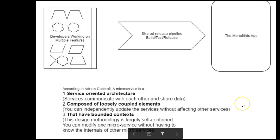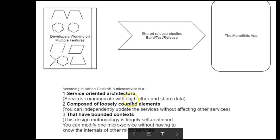Here's a definition I really like, made by Adrian Cockcroft. He said a microservice is a service-oriented architecture where services communicate with each other and share data. Secondly, it's a service-oriented architecture composed of loosely coupled elements that have bounded context. The elements — which are the features you're building — are 100% independent of each other. You can make any updates in any of them without worrying whether it will break anything. They have bounded context, meaning this service doesn't need to know the internal workings of another service.